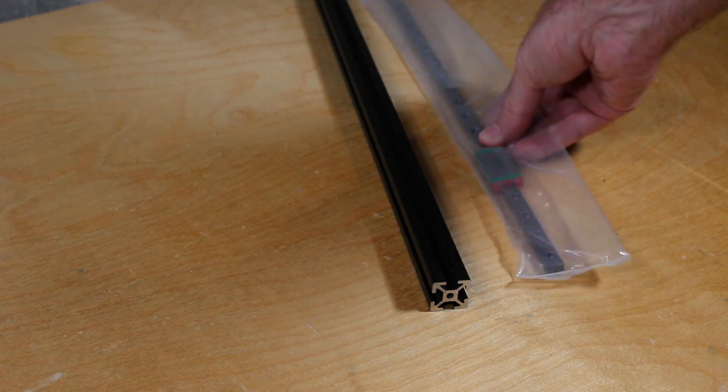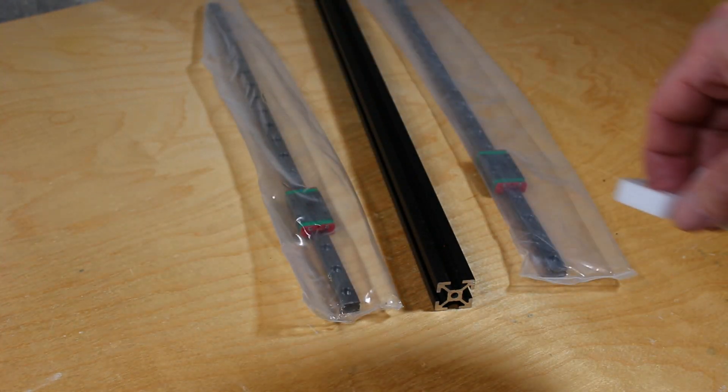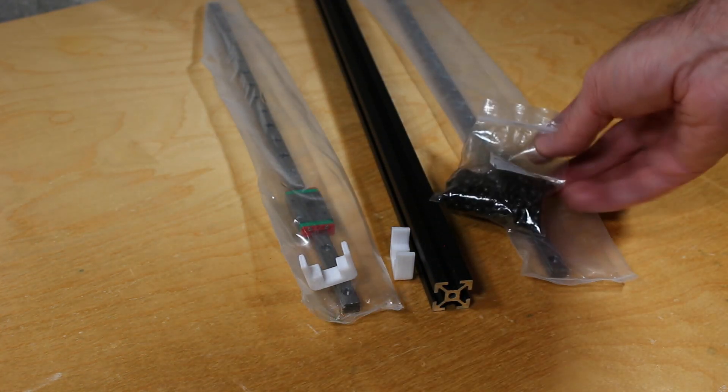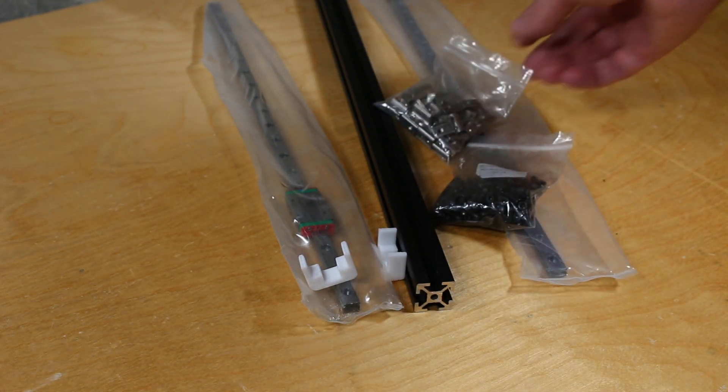You'll also need two of the linear rails, the two 3D printed rail installation guides, the M3x8 screws, and the extrusion nuts.